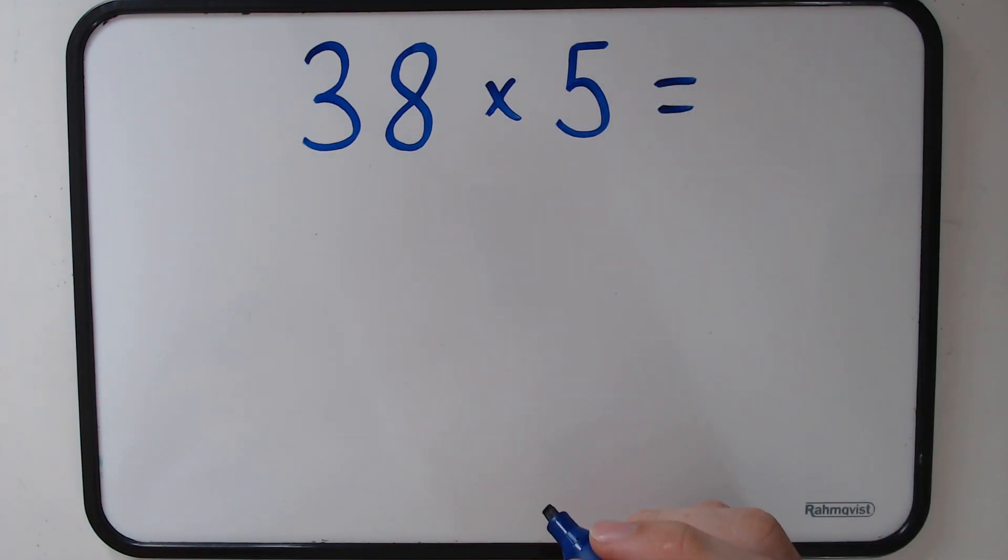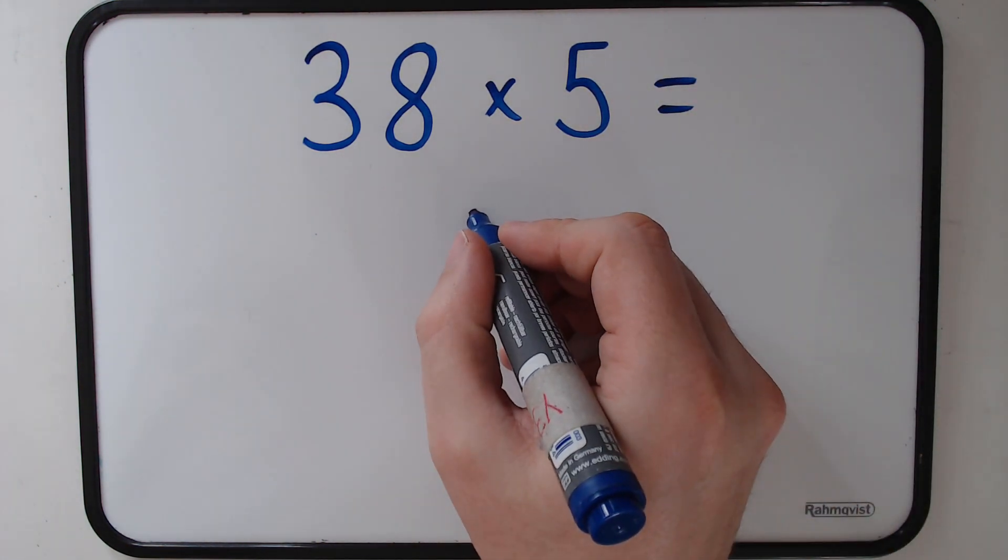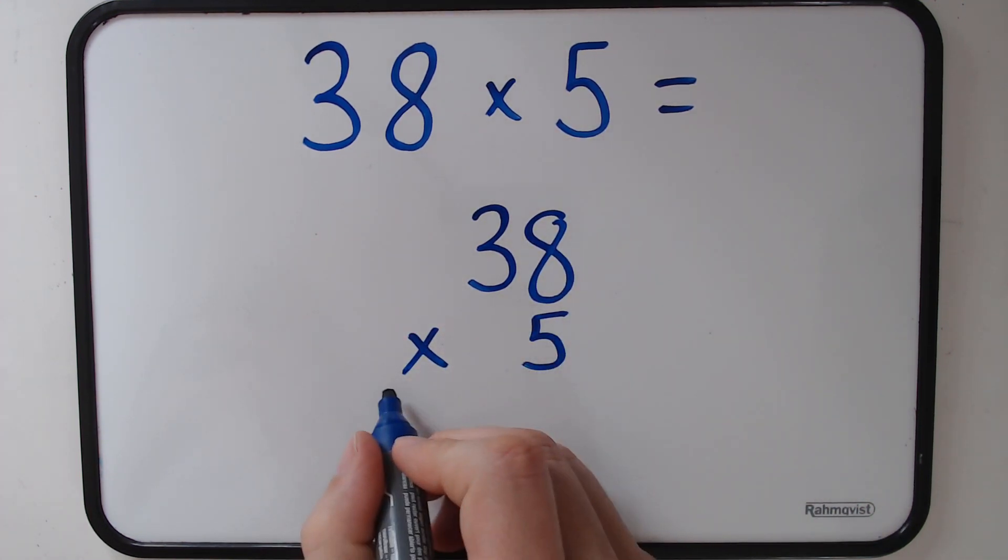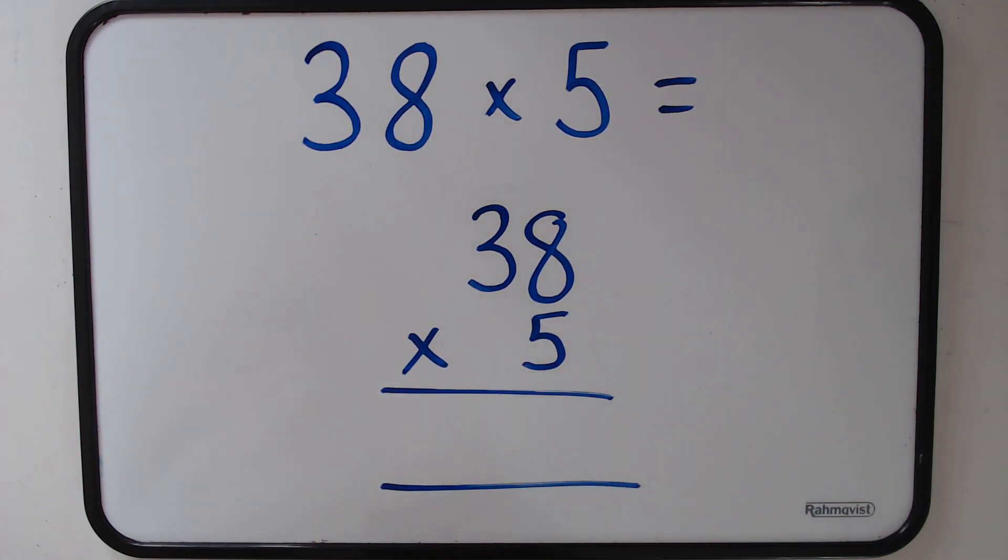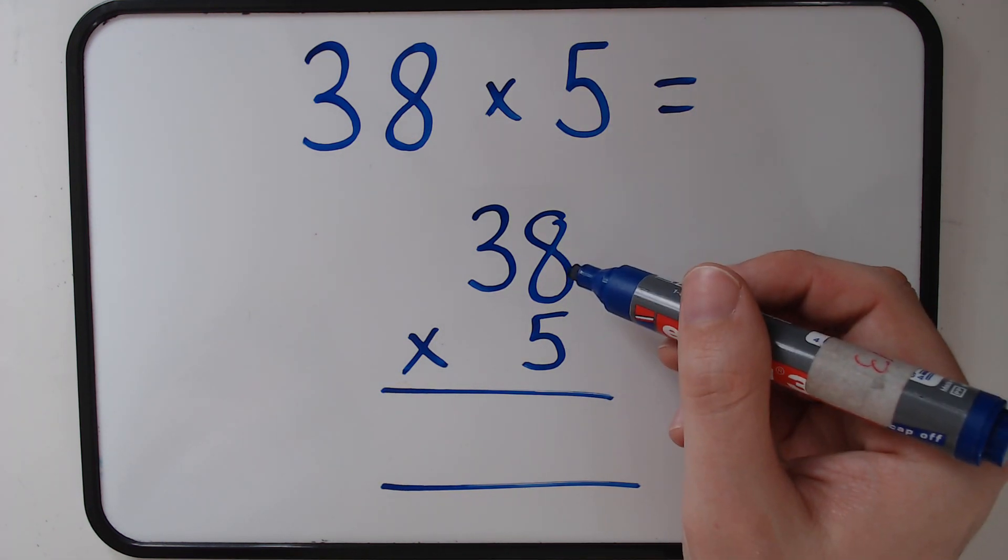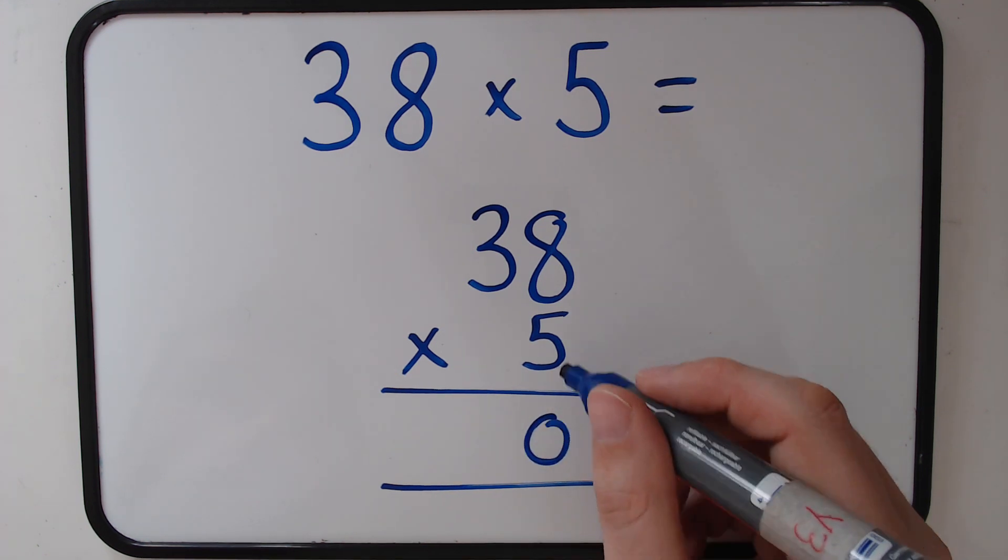We're going to set out using the column method, putting it into its place value columns. So we've got our 38 and our 5 underneath. We're going to start with the ones – that's where we always start. 5 times 8, or 5 lots of 8, is 40. Now we put the 0 in the ones column, and our 4 now goes in our tens column.